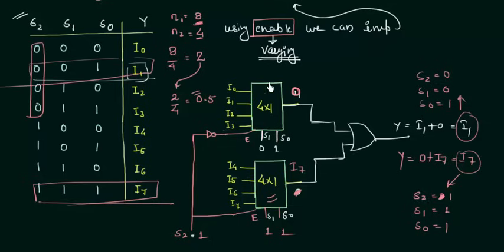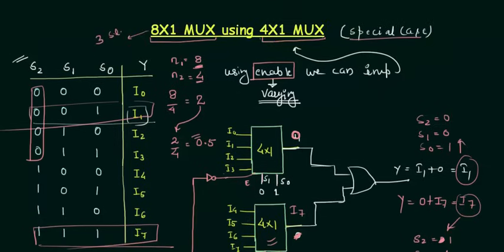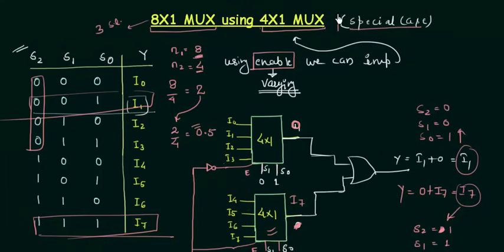So in this way we will implement the 8x1 MUX using the 4x1 MUX which is definitely a special case, and once you know how to use enable you can also handle some other special cases. So this is all for this presentation. If you feel any doubt in this thing then you can definitely ask in the comment box. So see you in the next presentation.